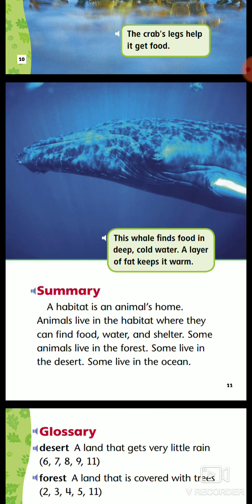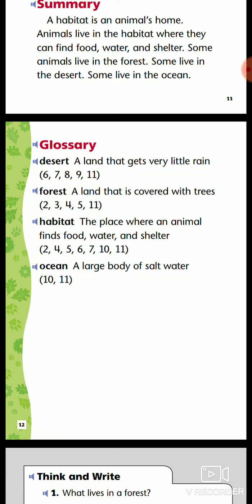Summary. A habitat is an animal's home. Animals live in the habitat where they can find food, water, and shelter. Some animals live in the forest. Some live in the desert. Some live in the ocean.